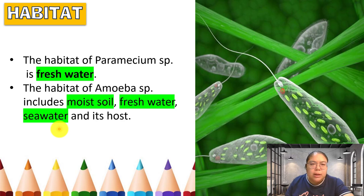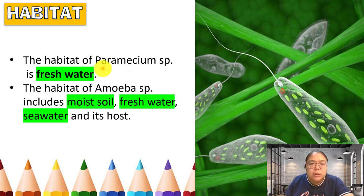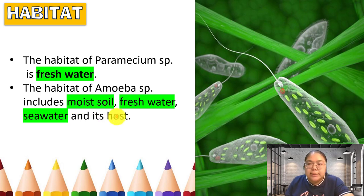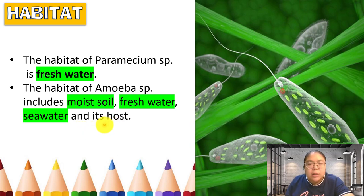Now the habitat of protozoa. Paramecium species live in fresh water locations. Amoeba are found in moist soils, fresh water, and sea water. Generally, protozoa also prefer dark conditions.